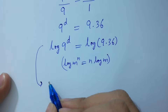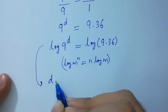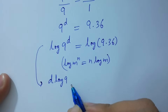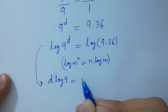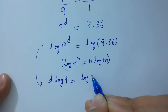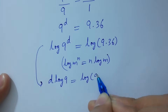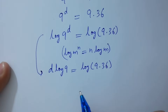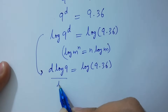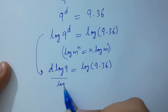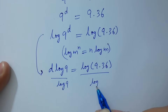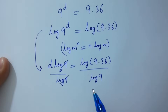We have d log 9 equal to log of 9 times 36. Divide by log 9 on both sides. Log 9 and log 9 will be cancelled.